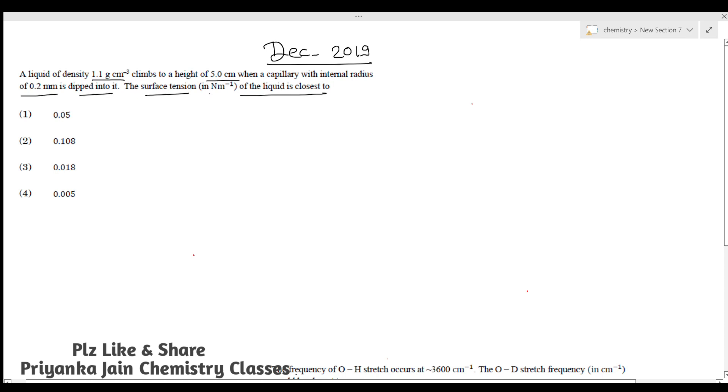First, you should know the formula: γ = (h × r × ρ × g) / 2. Here, h is the height, r is the radius, ρ (rho) is the density, and g is 9.8 m/s². Now you have to put these values.